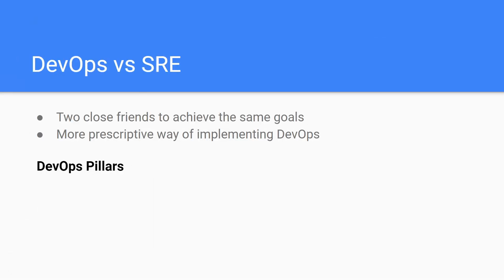So coming back to the same question: how is DevOps different from SRE? Google has made it very clear in their articles and videos — I'll paste those links in the description — that SRE is a prescriptive way of implementing your DevOps philosophy. DevOps is a cultural transformation that happens in a company to break the silos, and there are DevOps principles or pillars that companies measure. SRE makes it very prescriptive to implement those DevOps philosophies.